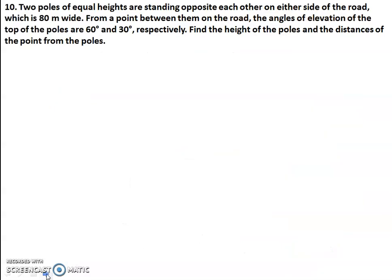Tenth question: Two poles of equal heights are standing opposite each other on either side of the road, which is 80 meters wide. From a point between them on the road, the angles of elevation of the top of the poles are 60 degrees and 30 degrees respectively. Find the height of the poles and the distance of the point from the poles.